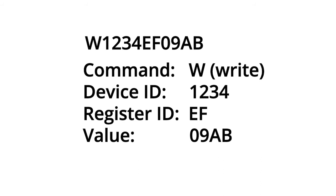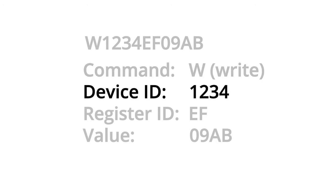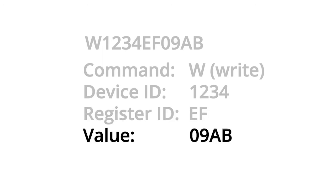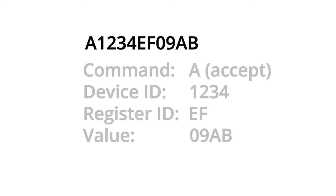All in hex ASCII strings. Then the WWEP database server will respond with an A for accepted, followed by the device ID, location ID, and value, or just with an X if the last transaction is rejected. For example, for a WWEP client to write the value hex 98AB to device ID 1234 in location EF, it would open up a socket and then send W1234EF09AB. The W means write, the 1234 means device ID 1234, the EF means register ID EF, and the 09AB is the value to save. The server would then respond with A1234EF09AB.